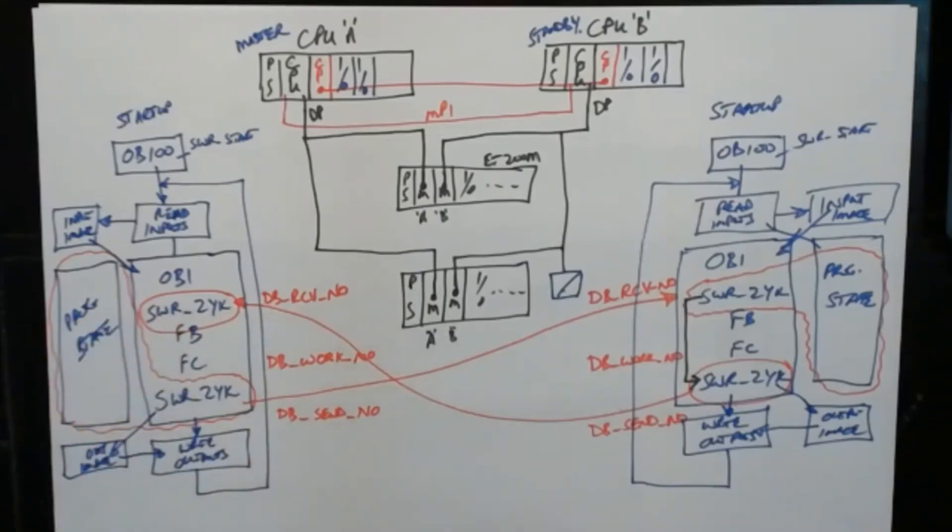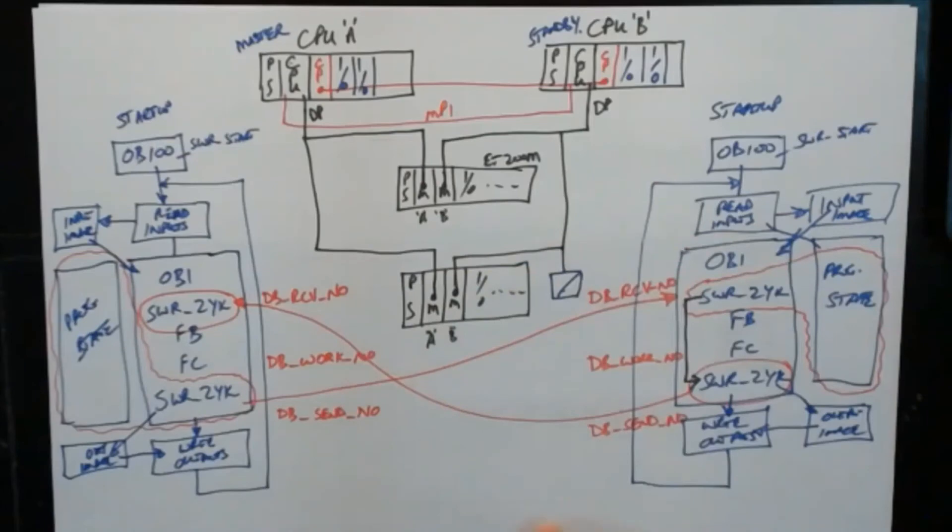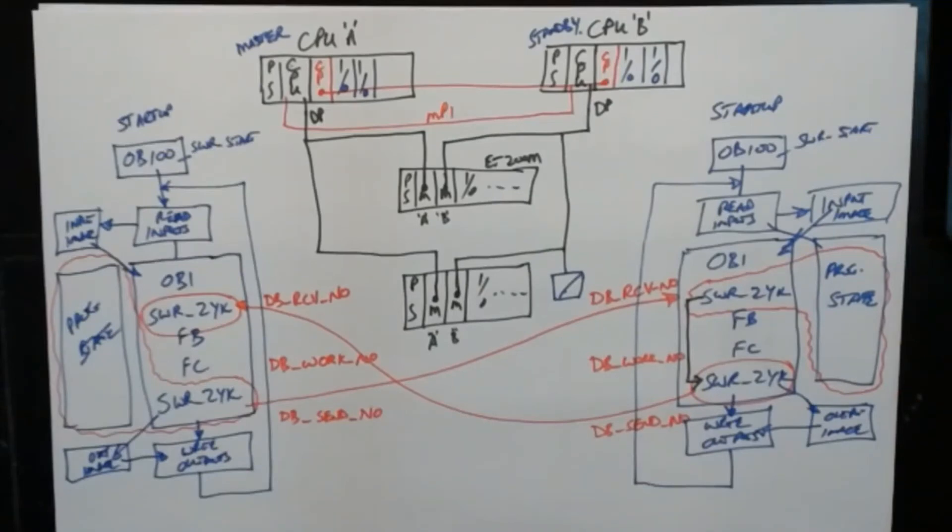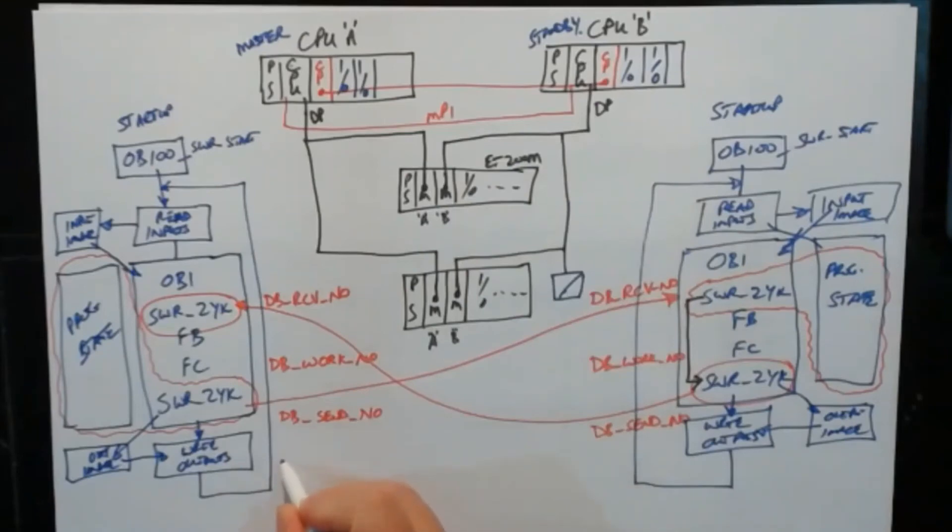But now there are cases where this CPU needs to know the state of that plant or this CPU needs to know the state of that plant. So the way to do that is we have two more DBs. We call it the CPU A and that's B, so we have a DB, DB_A_TO_B_NO and a DB, DB_B_TO_A_NO.